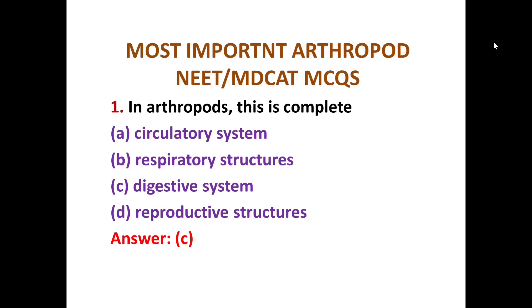Hello friends, today we will discuss 10 very important MCQs from Phylum Arthropoda, covering different structures and species. The first MCQ asks which system is complete in arthropods. The options are: a) circulatory system, b) respiratory structures, c) digestive system, d) reproductive structures. The correct answer is option C — the digestive system is complete in arthropods.